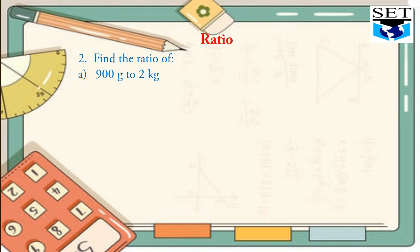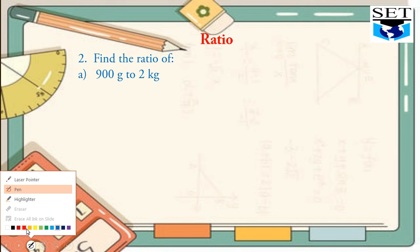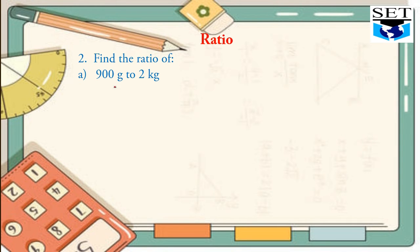Another question: find the ratio of 900 g to 2 kg. Here you can see both units are unlike or different. In order to find a ratio, the unit should be like or same. So first of all, we have to convert these units into a same unit. Let's start our solution.